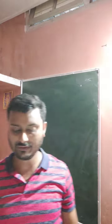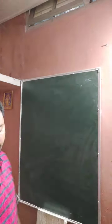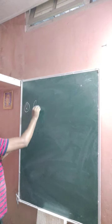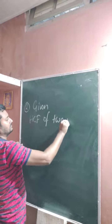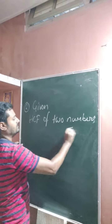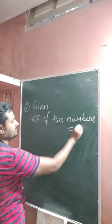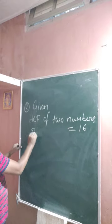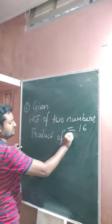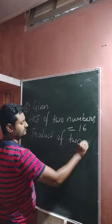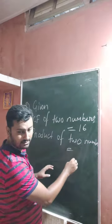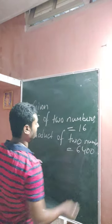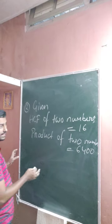Come to question number two. The HCF of two numbers is 16 and their product is 6400. Determine the LCM. The product of two numbers is 6400. Write the formula first, so you can easily understand what the numbers are. We have to find the LCM.